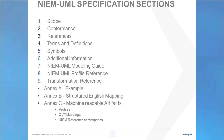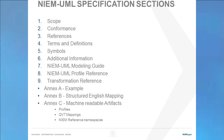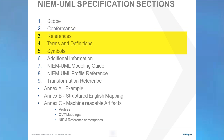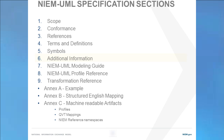The Niem specification has multiple parts applicable to different stakeholders. Section 1 is the scope and provides a good overview and introduction to NiemUML. The conformance specification specifies how tools and models will conform to the NiemUML specification. References, terms, definitions, and symbols provide background for how to read the specification. Additional information also provides background and may be a good introduction. For those who will be modeling with NiemUML, Section 7, the Modeling Guide, is an excellent reference.